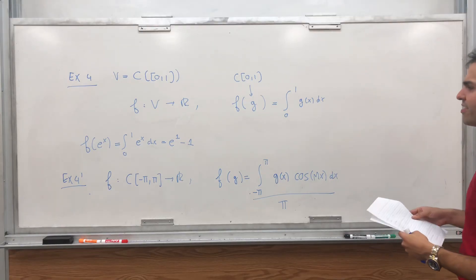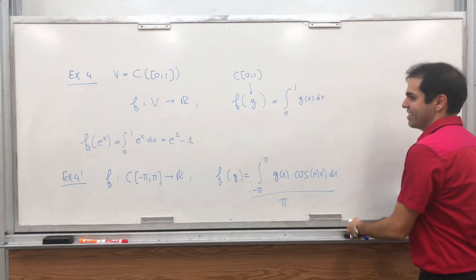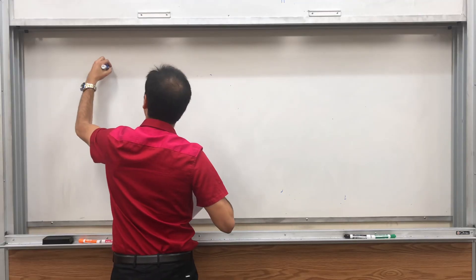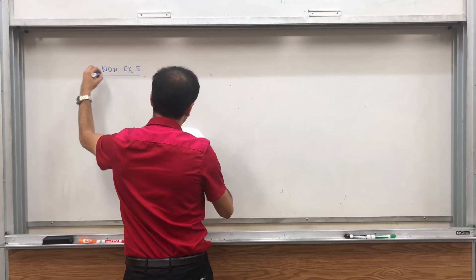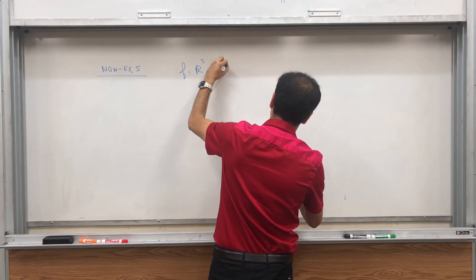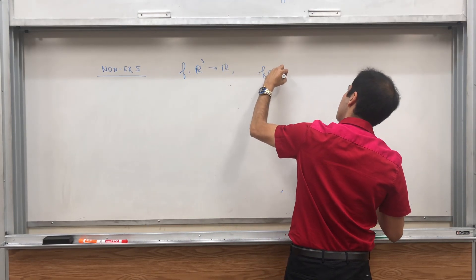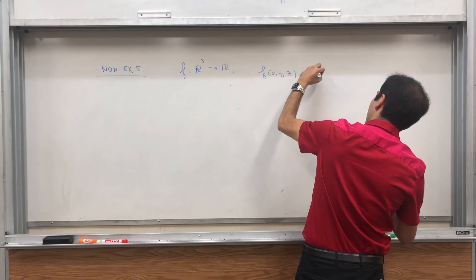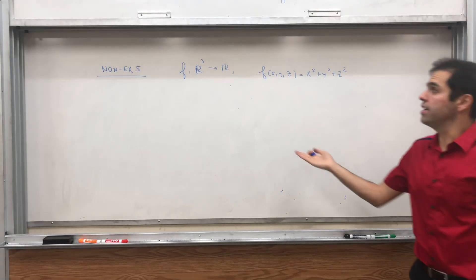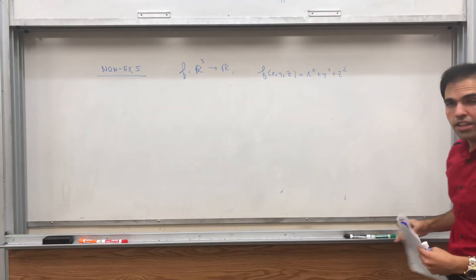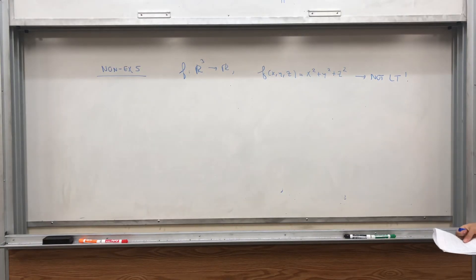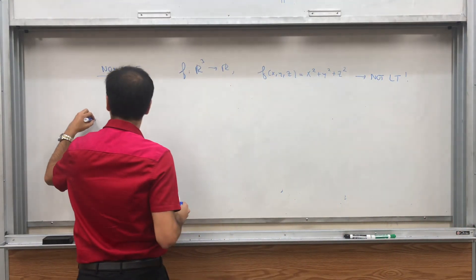And there are other examples, but let me also focus on some non-examples. So what would not be a linear functional? So non-example 5, take F from R³ to R, and just F of x, y, z be x squared plus y squared plus z squared. Yes, it maps into R, but here's the problem. This is not a linear transformation, because it has squares in it. Usually stuff with squares, it's a big no-no in linear algebra.